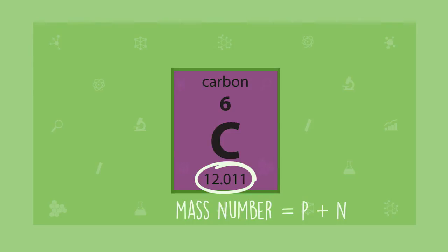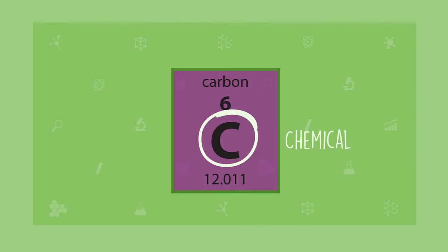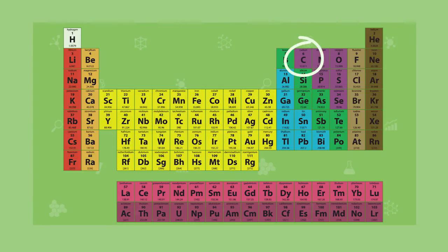The box for carbon also contains the letter C. If you're guessing that this stands for carbon, you're correct. Chemists like to use shorthand whenever they can, so instead of writing out the full name of an element, they use a symbol to represent it. Chemical symbols can be one or two letters. While carbon is C, you'll notice that cobalt is Co and copper is Cu. The first letter is always a capital, and the second letter, if there is one, is always lowercase.